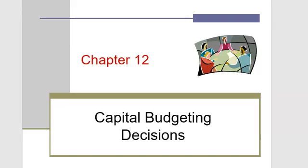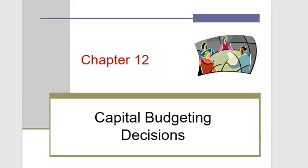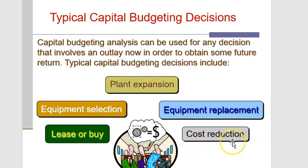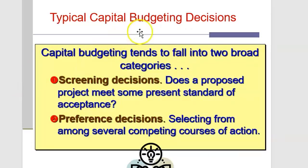You had last week the weighted cost of capital, which is one of the components that goes into the management accounting side of doing a capital budgeting decision. So why do firms do capital budgeting? Well, plant expansion, equipment selection, decisions whether to lease or buy a property or equipment, equipment replacement, and cost reduction.